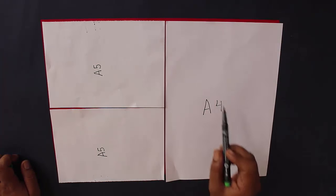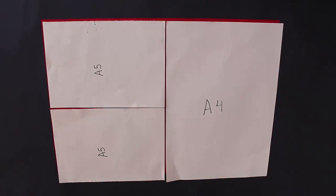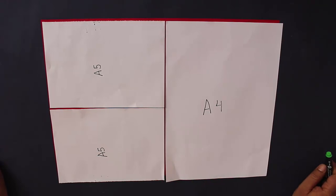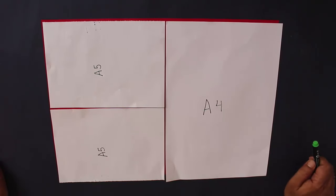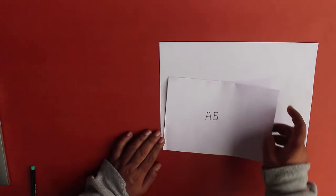So the red paper is A3, this is A4 and half of this is A5. And what's interesting about this is that the ratio of each of this series is exactly the same. In other words their shape is exactly the same.